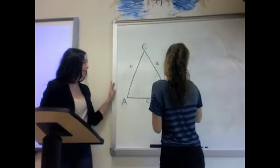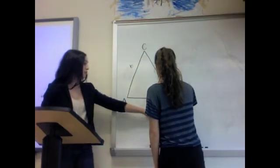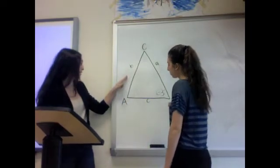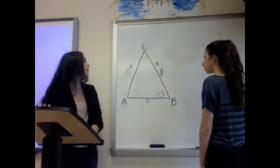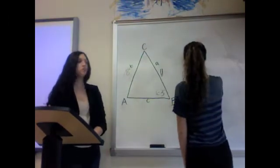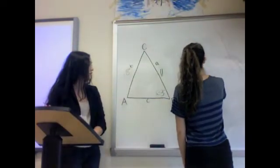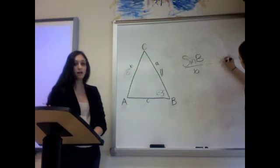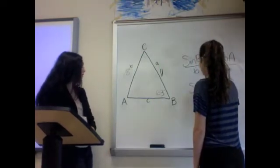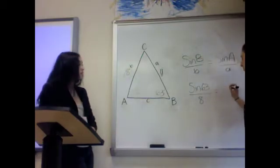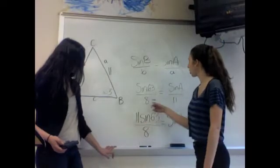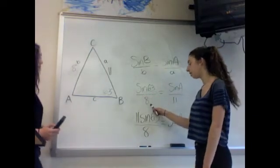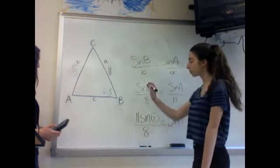So here we have triangle ABC, where angle B is 63 degrees, side B is 8, and side A is 11. To solve this, we're going to use the law of sines: sine B over B equals sine A over A. So we have sine of 63 over 8 equals sine of A over 11. So you multiply 11 times the sine of 63 and divide by 8, but when you plug into the calculator, you get an error, which means that this problem has no solution.